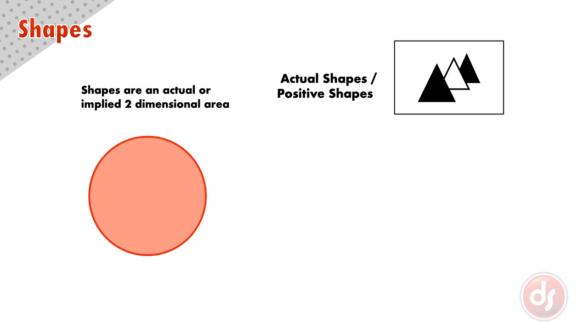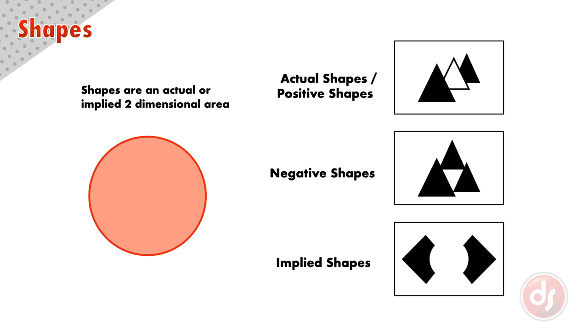And if we can have a positive shape, we can also have a negative shape, which are the shapes around the positive shapes. Implied shapes are made up of elements in the design that don't technically connect to create a shape, but your eye fills in the missing portions to create a completed shape.